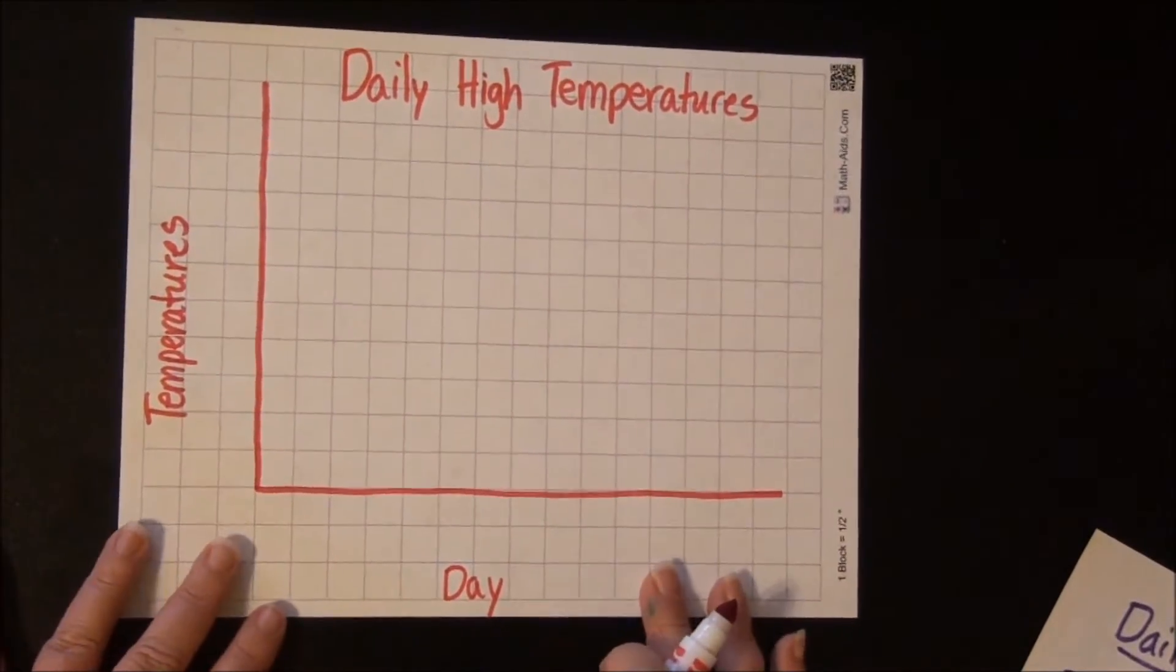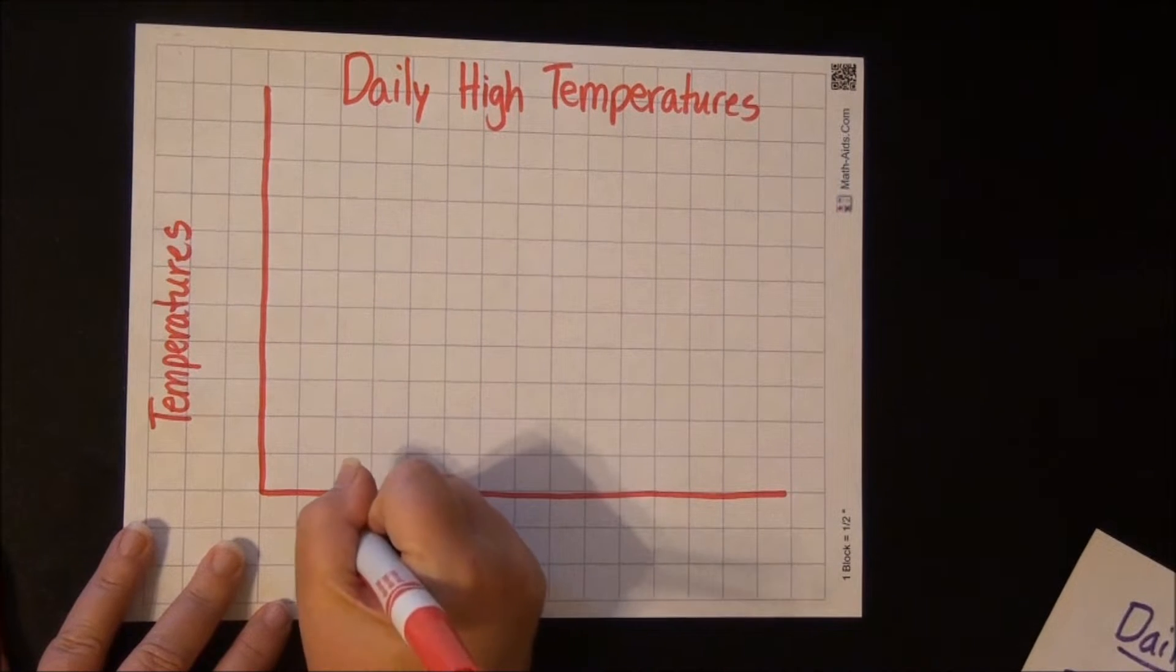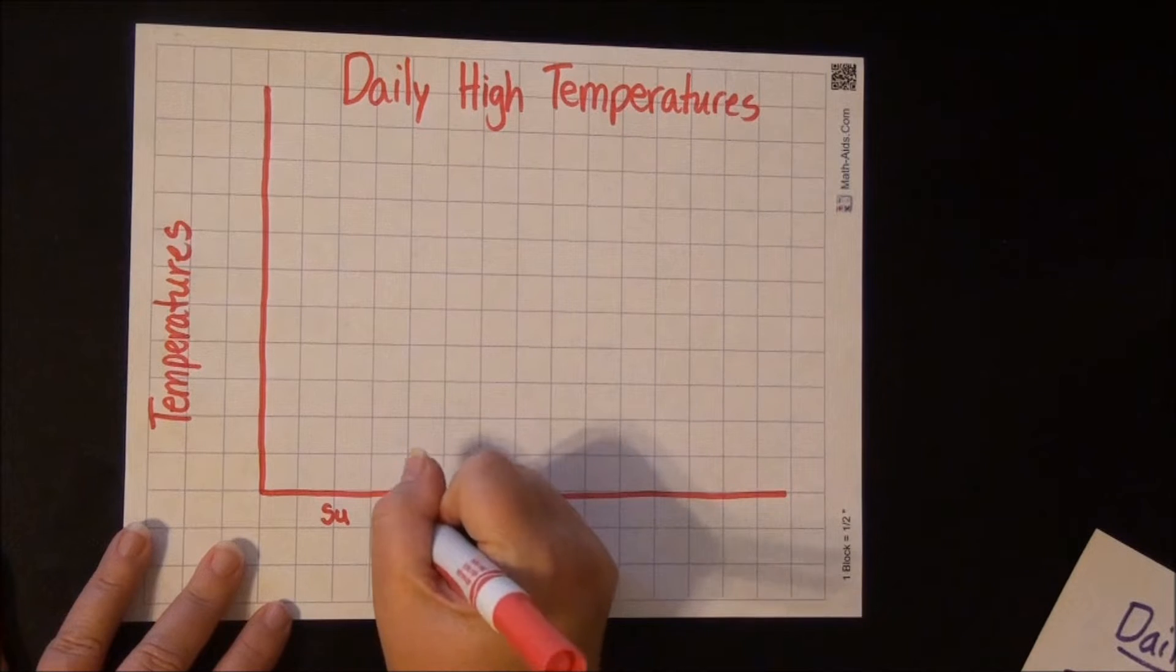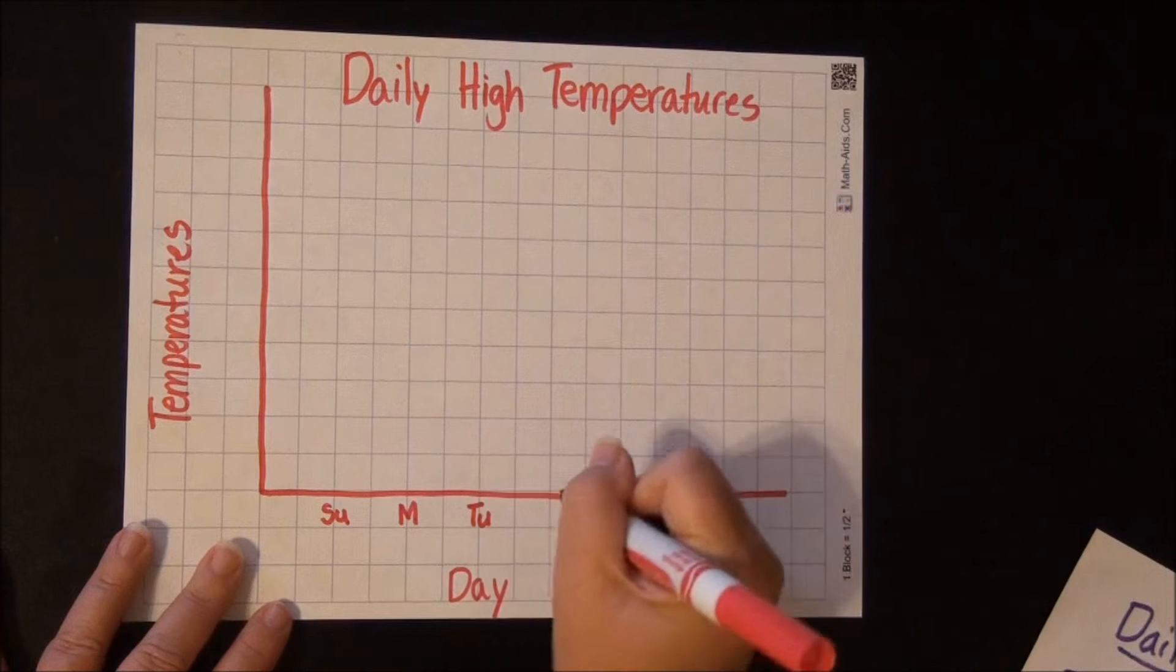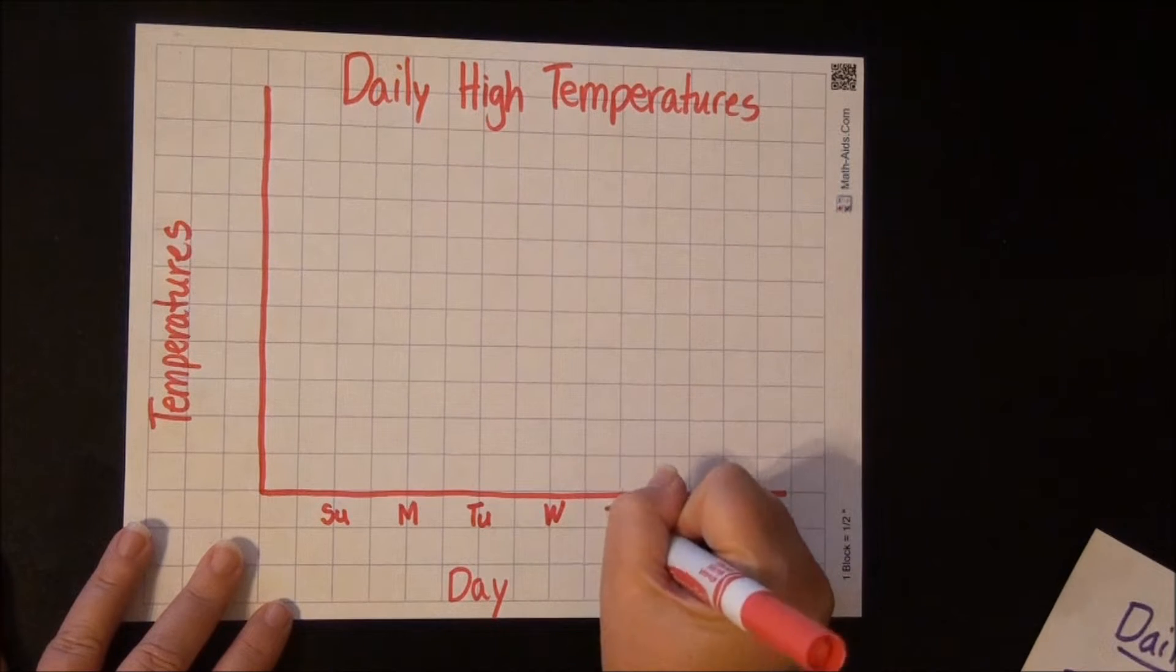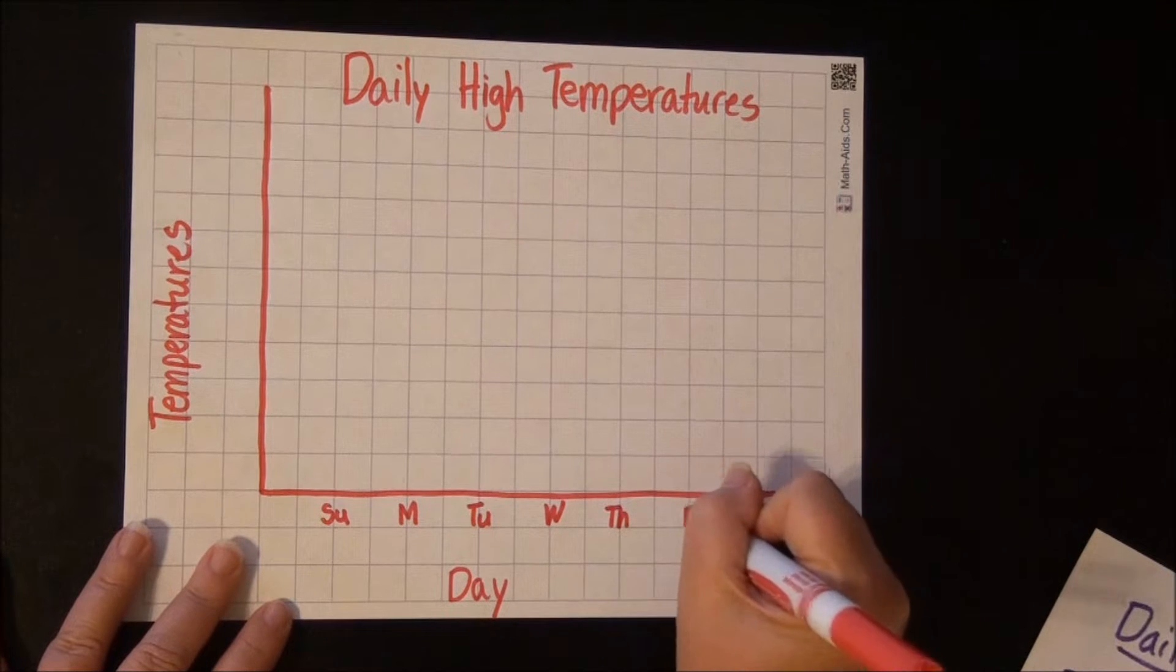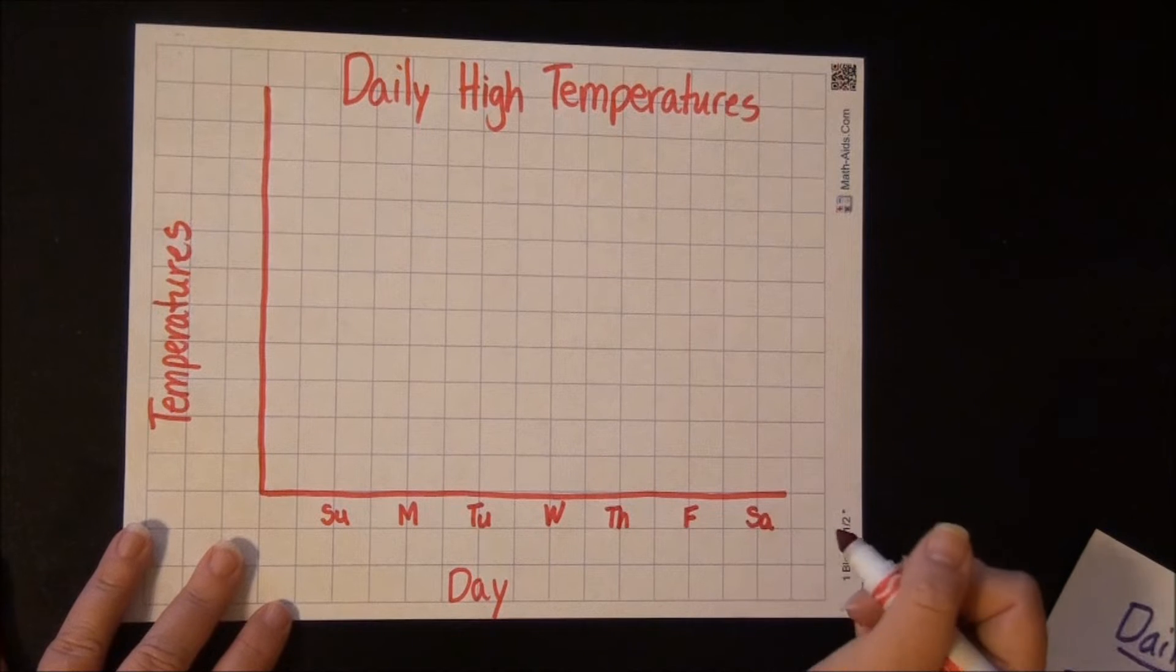So the days that we recorded the temperatures are Sunday, so I'm going to put SU, and then Monday. Tuesday, we're going to put TU, Wednesday, Thursday TH, Friday will be F, and Saturday will be SA.